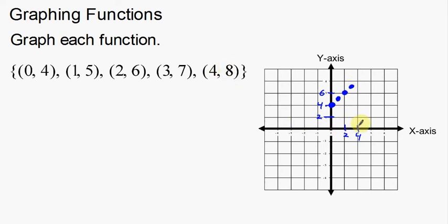4, 8. 1, 2, 3, 4, and then 1, 2, 3, 4, 5, 6, 7, 8. Look at that. It does look like we have what's called a linear progression, a line that's going up.